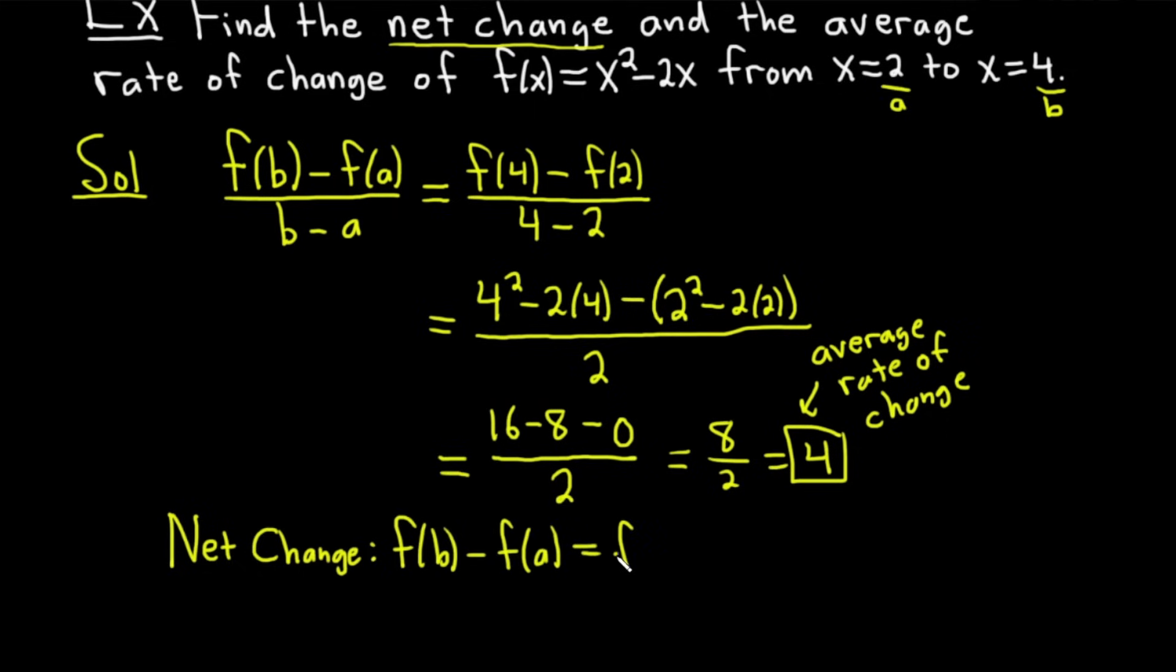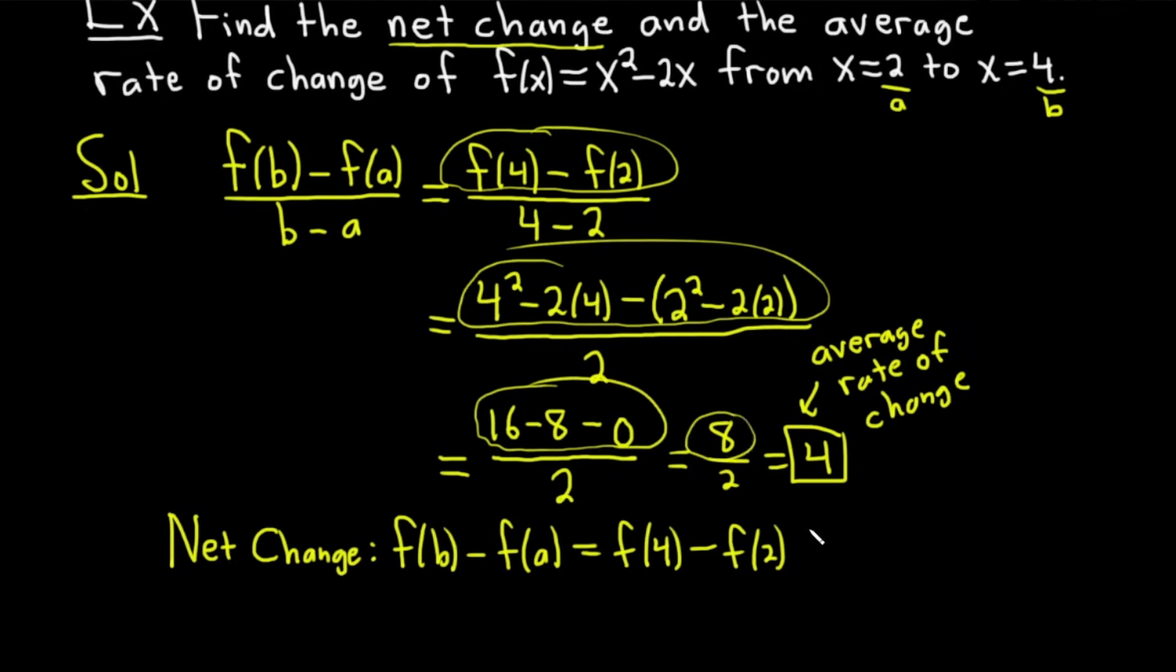That's equal to F(4) - F(2). Well we worked that out. It's the top part, right? So here's F(4) - F(2). And then it's right here because we worked it out. And so it ends up being 8. So the answer is 8. 8 would be the net change. I don't know why I'm capitalizing it but that's kind of fun. The net change.